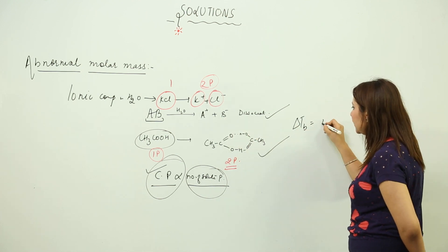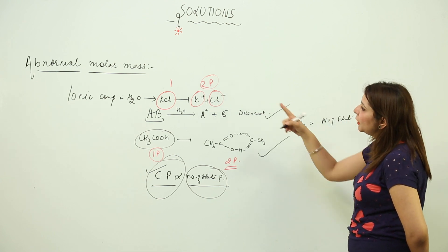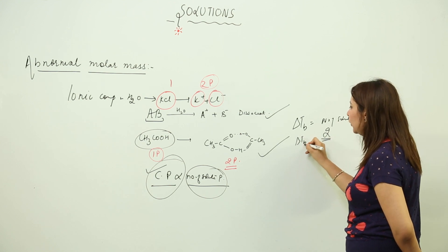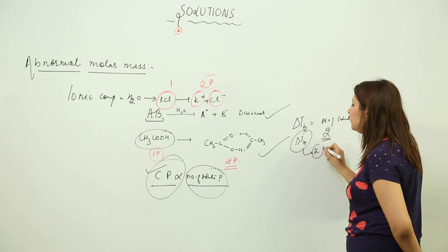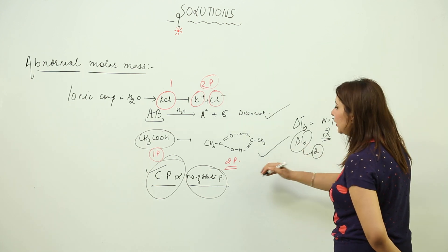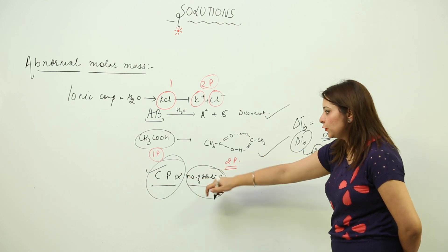Like suppose I take an example, if I have elevation in boiling point in this case, if it depends upon number of solute particles, so if the number of particles increases to two times, that means this elevation in boiling point will also become two times.